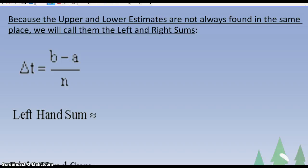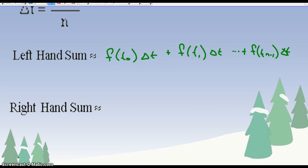So the left-hand sum starts with the first position. Here's the notation for it, that it's going to be f of t sub 0 times the delta t, plus f of t sub 1 times delta t, and that's all the way up to f of t n minus 1 times delta t. The right-hand sum starts 1 over, so f of t sub 1 times delta t, f of t sub 2 times delta t, and this one goes all the way up to f of t sub n times delta t.